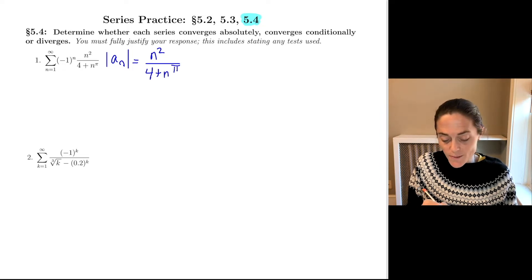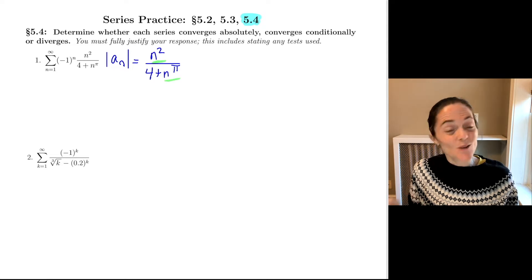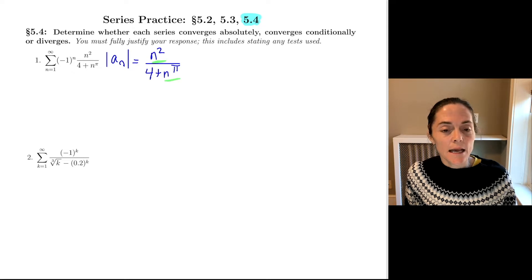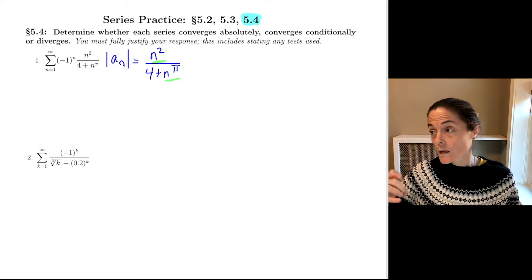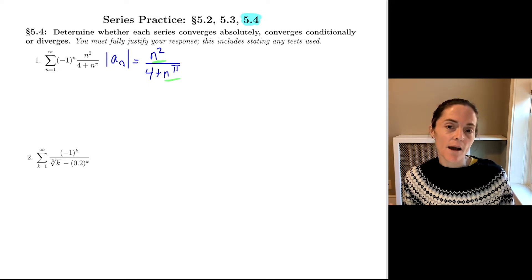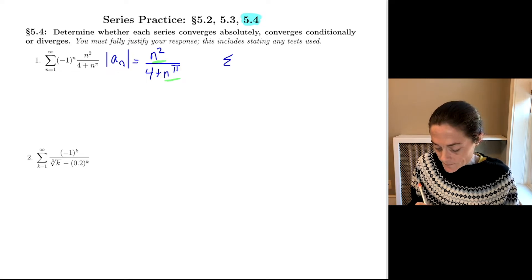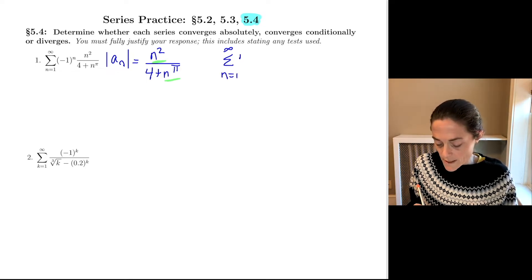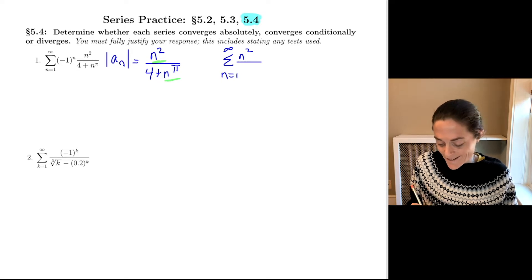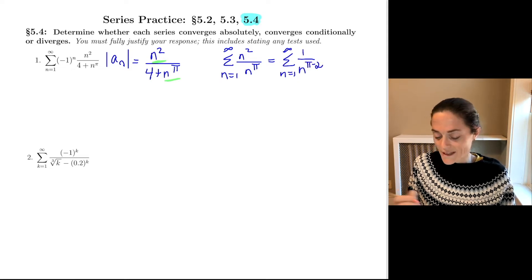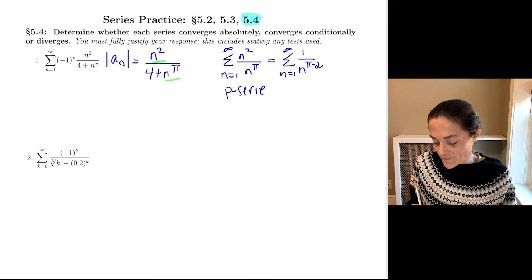Ask yourself: are the terms going to zero? We have n squared in the numerator and n to the pi in the denominator. Pi is bigger than two, so without a doubt the terms are going to zero. This strategy also helps us figure out what we can compare to. Let's compare to this p-series: the sum from n equals one to infinity of n squared divided by n to the pi, which is the sum of one over n raised to the pi minus two. This is a p-series.